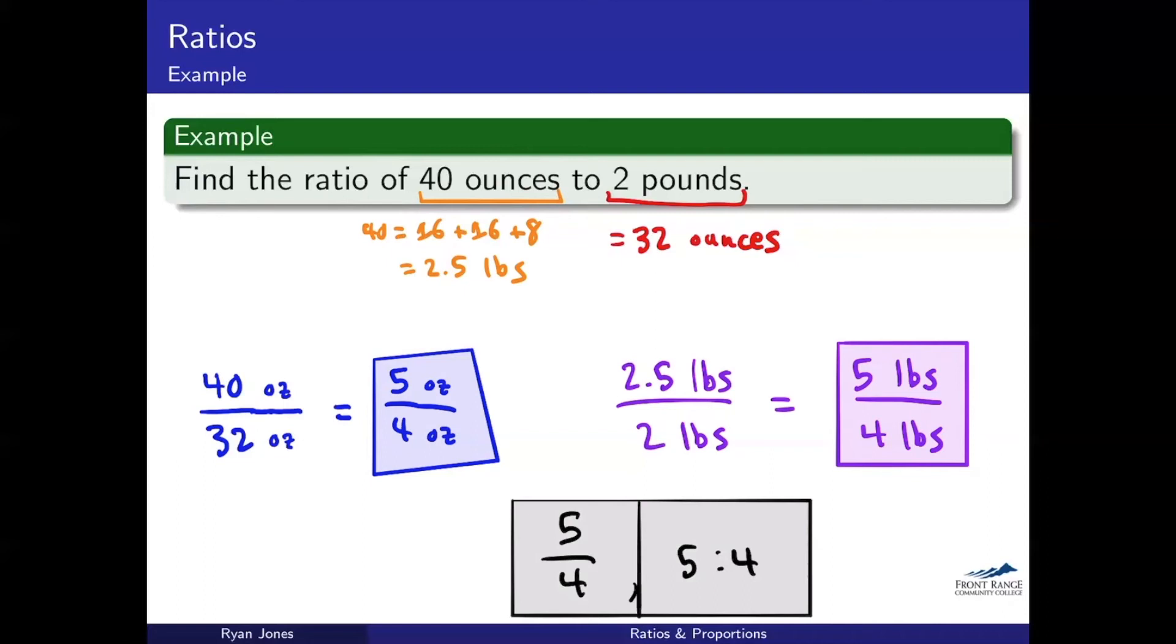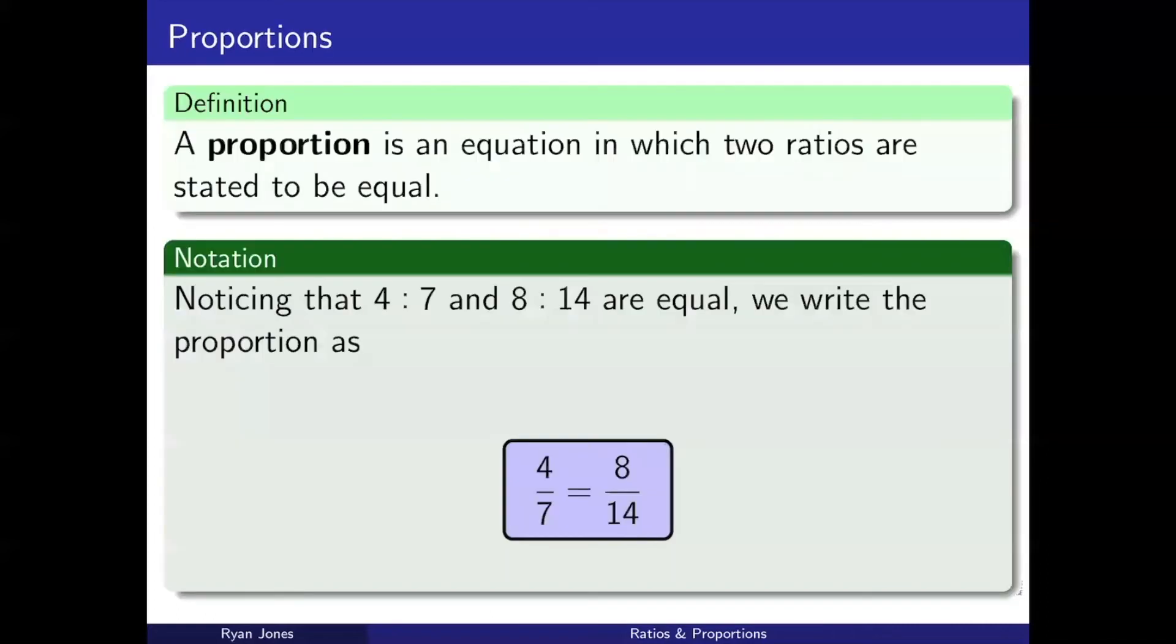So it would totally work out for us to just write five over four, or you could write five to four. And those would be perfectly acceptable answers. So there we go. There's an example with actual units in there. Let's go ahead and move on to proportions.